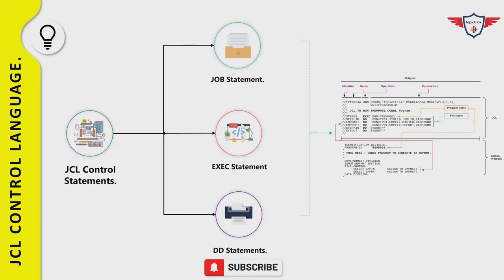In every job, the control statements are grouped into job steps. A job step consists of all control statements needed to run one program. If you want to run more than one program in a single job, you have to write a separate step for each program. Each step will have an execute statement specifying the program name and a couple of DD statements specifying the datasets used in the program.